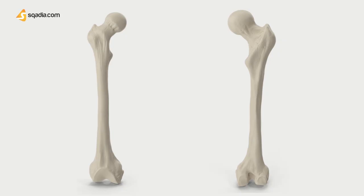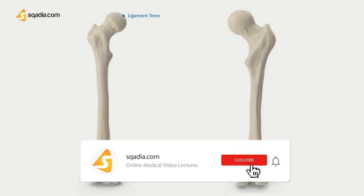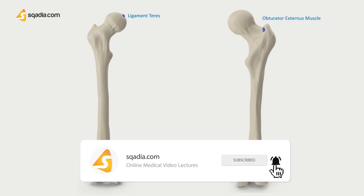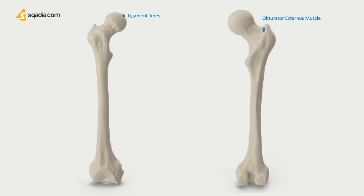The fovea capitis, the small depression on the head of the femur, is where the ligamentum teres attaches. The obturator externus muscle attaches at the internal part of the greater trochanter on the neck. The lesser trochanter is the site of attachment for the iliopsoas muscle, and forceful contraction of this muscle can cause an avulsion fracture of the lesser trochanter.